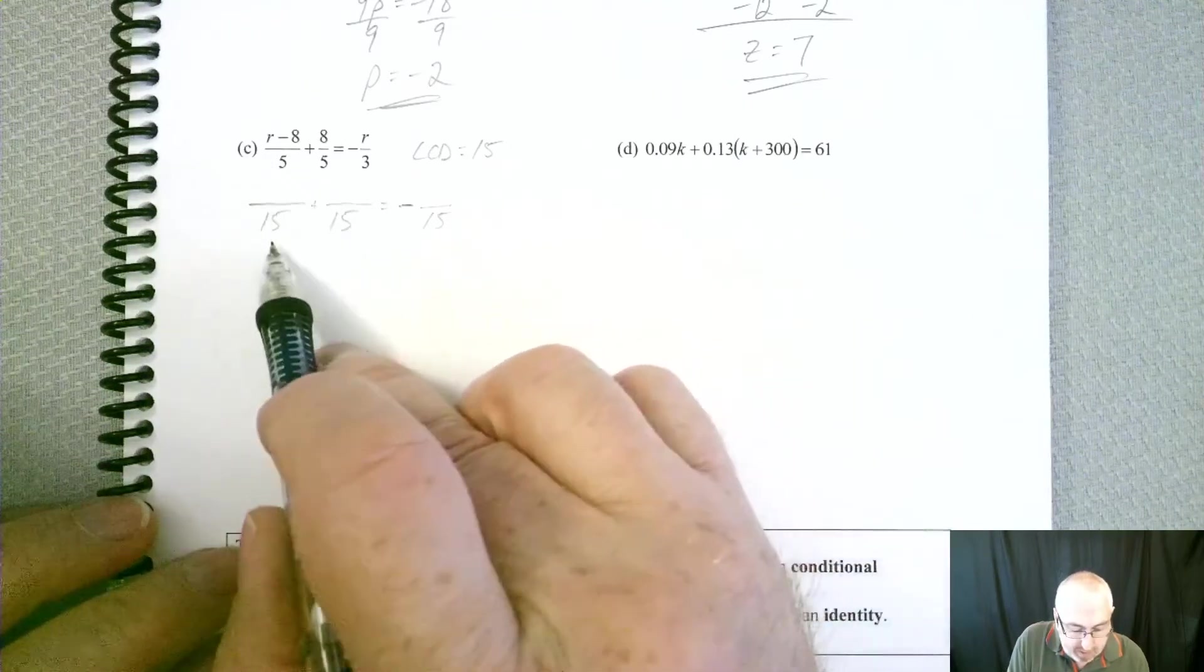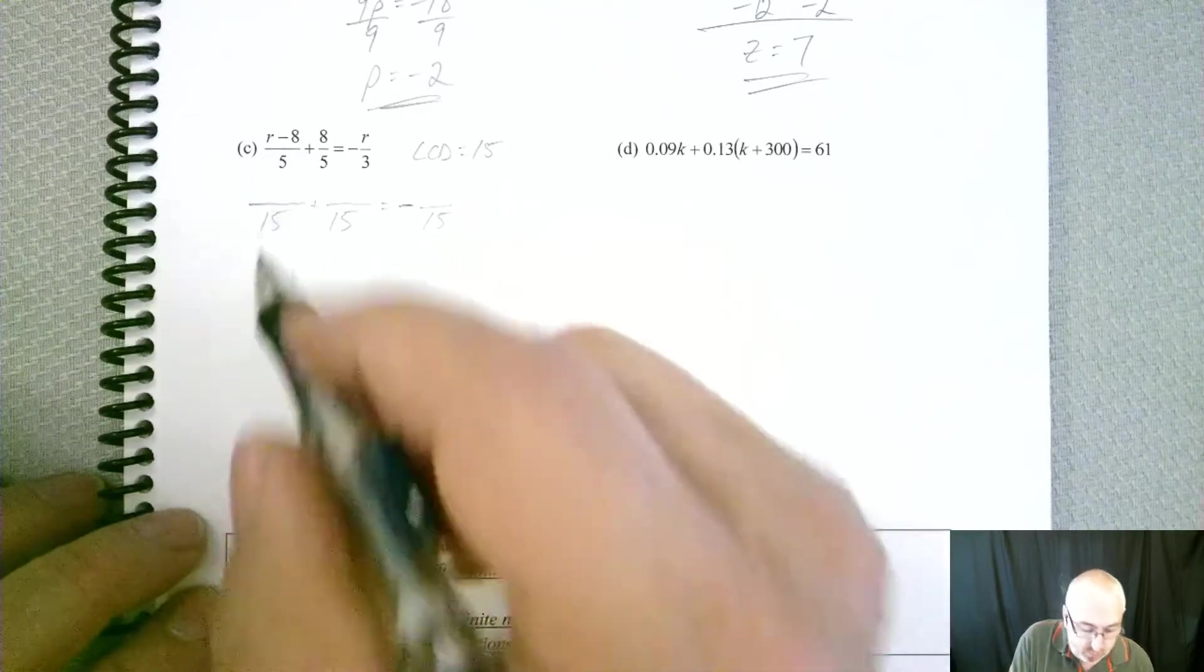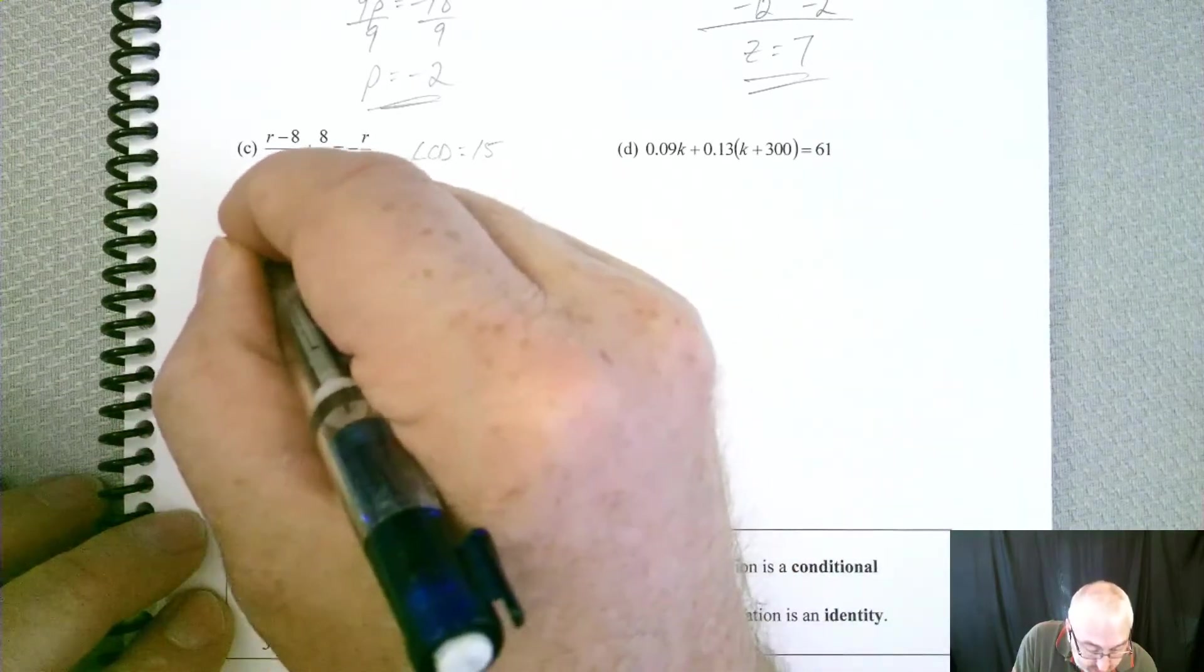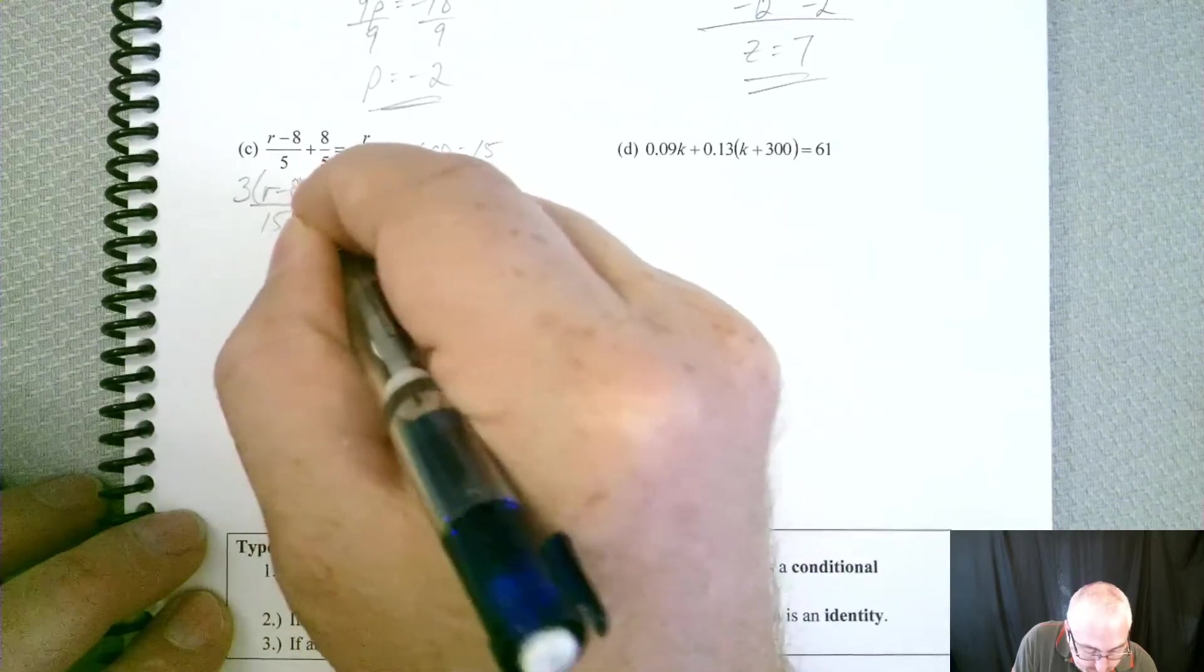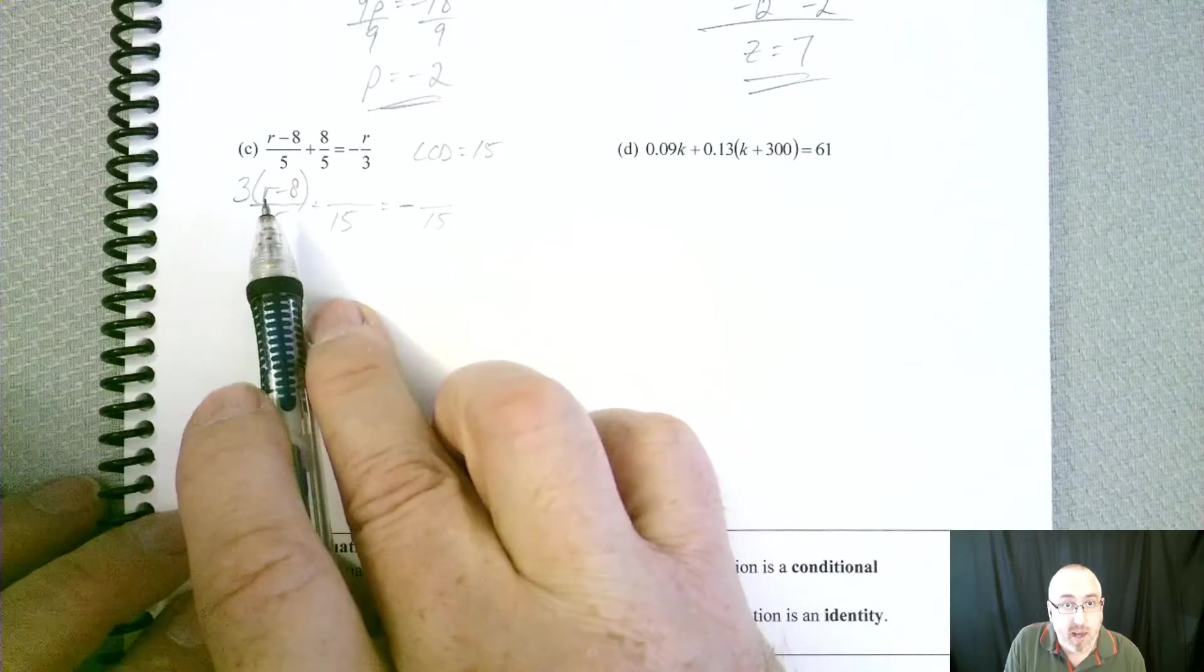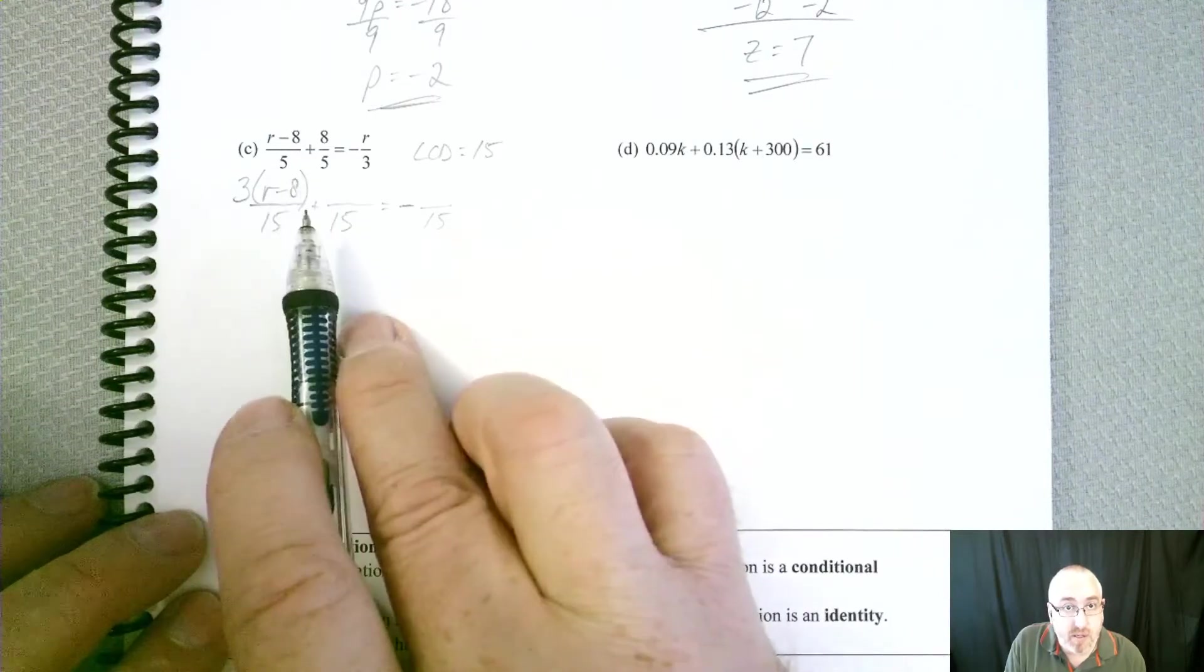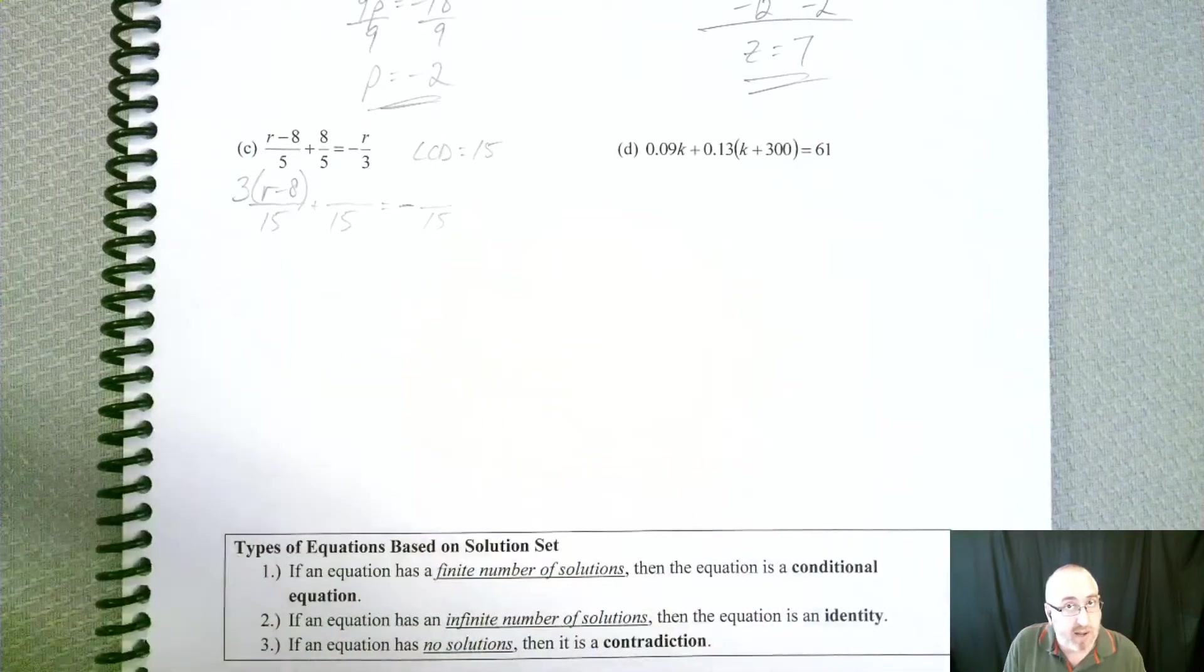So what did we multiply by to get to 15? We had to multiply by 3. So if we do that on the top, now I'm not going to write it all out, but I'll write it like this. So whatever we had up there, I'm going to put it in parentheses, and then I'll just multiply it by the 3. I'll take care of all that in the next step.